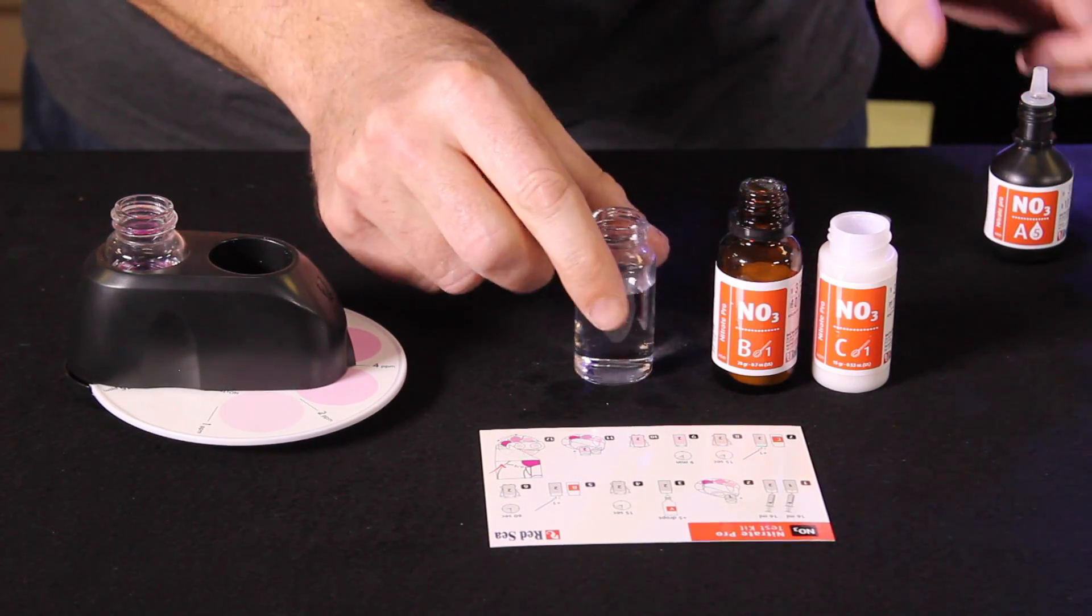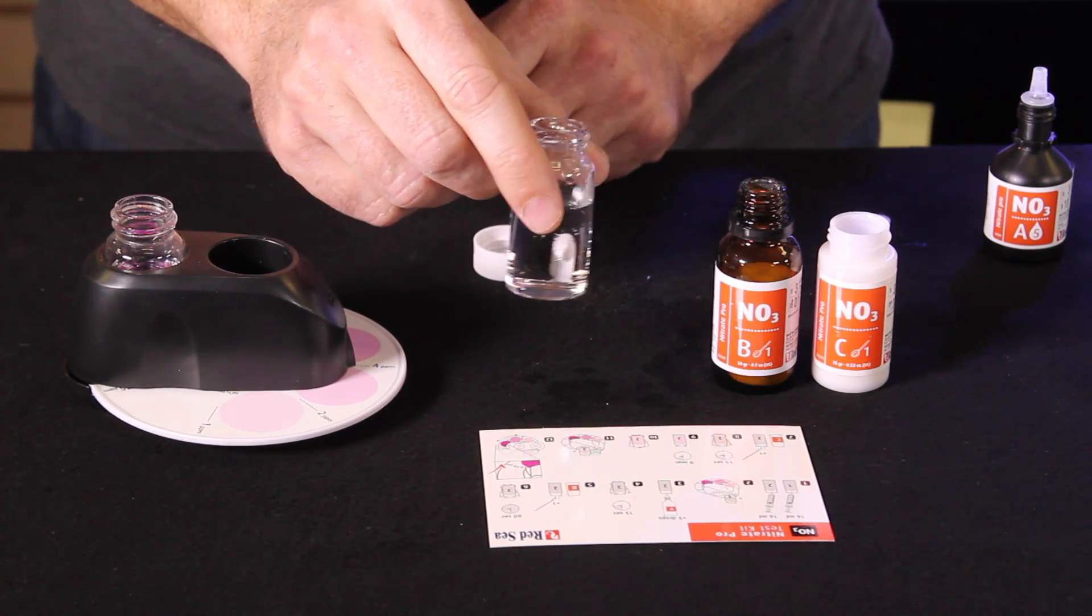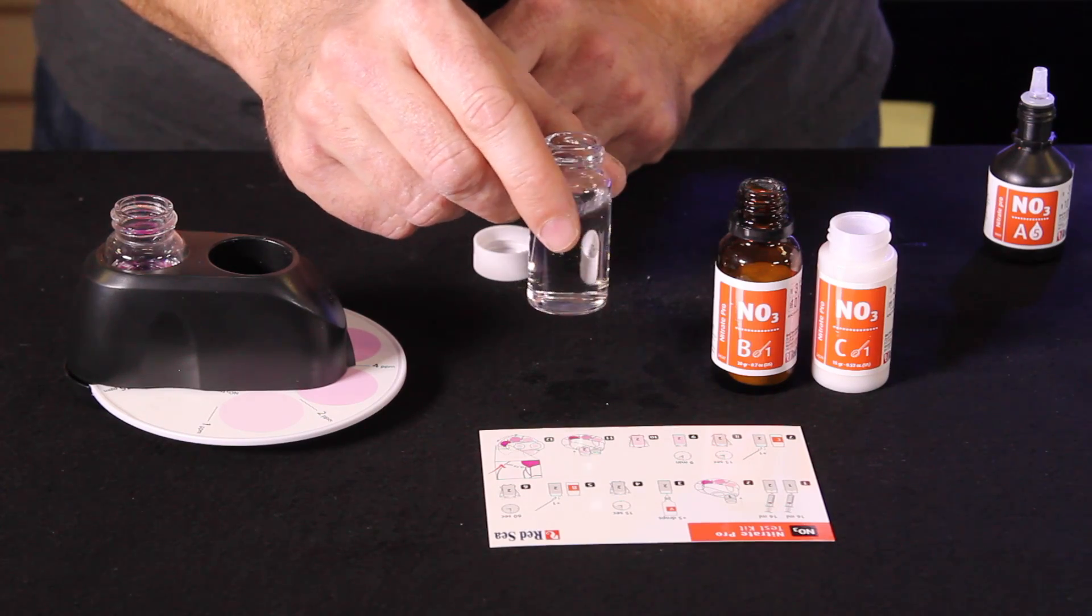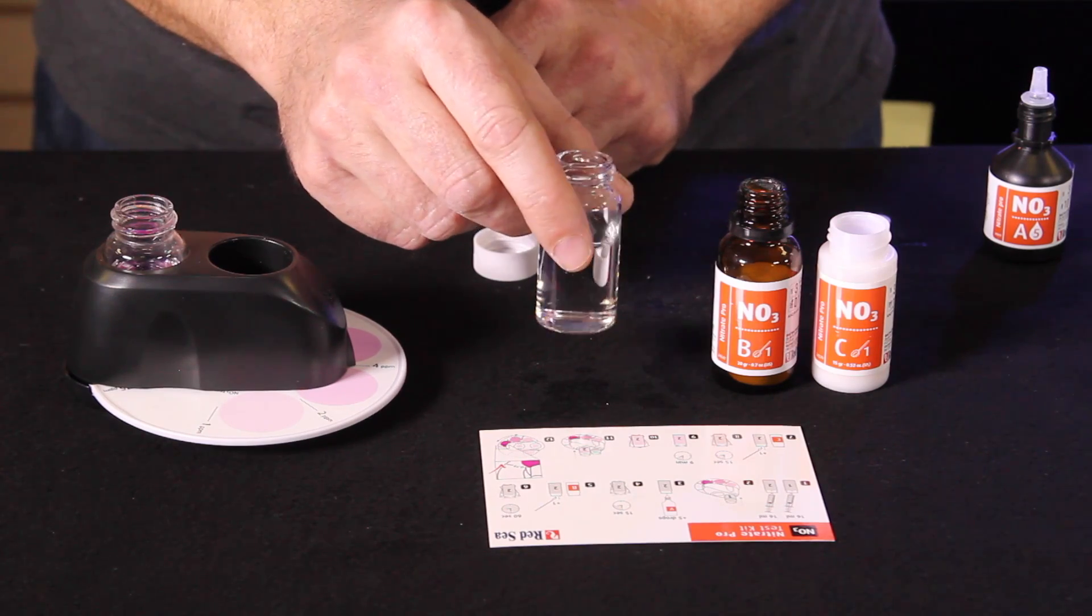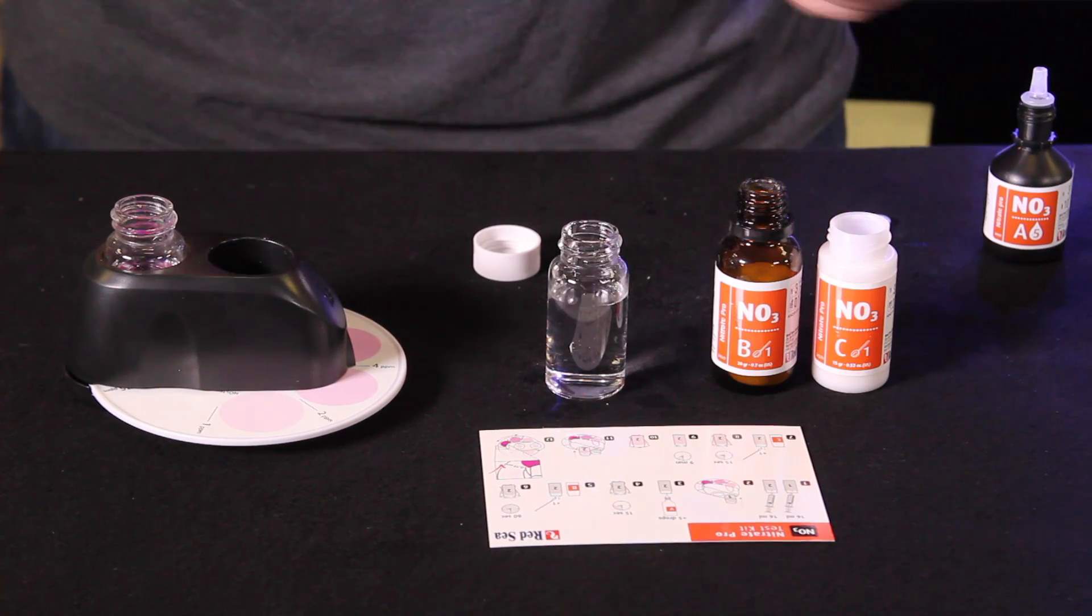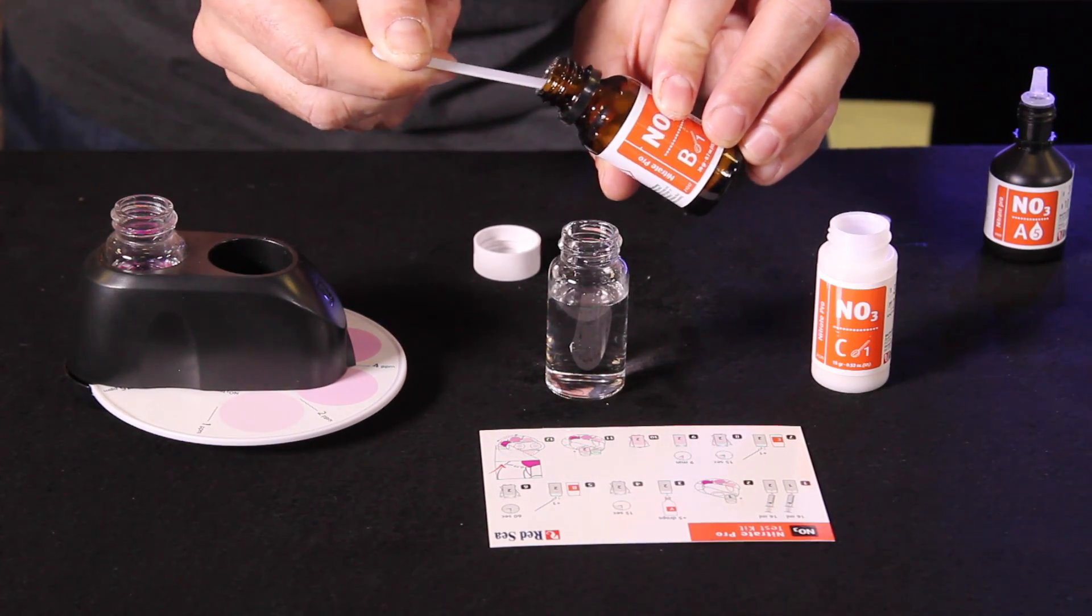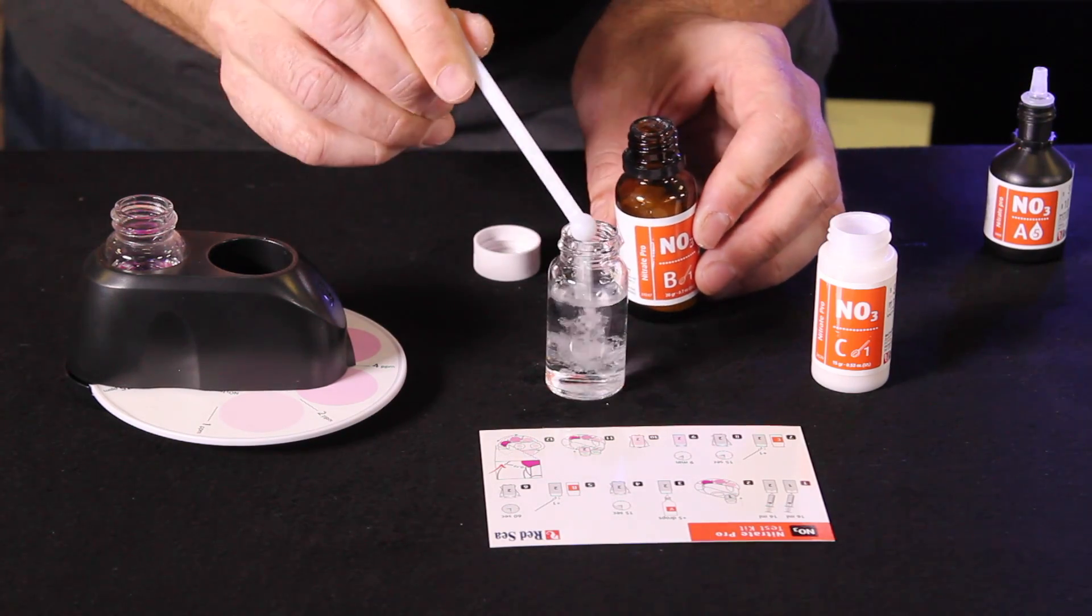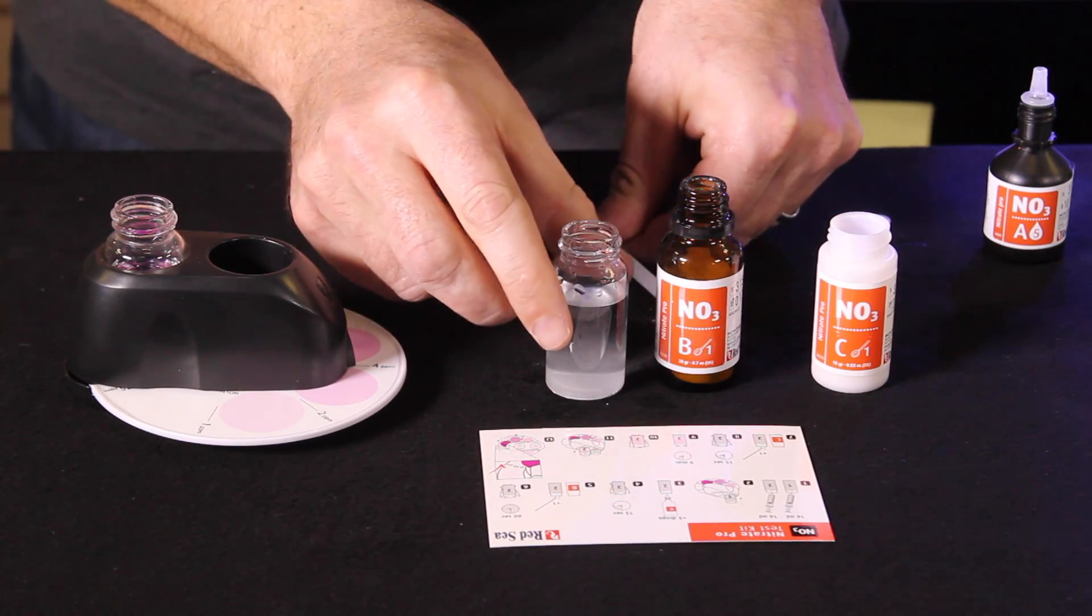Now we need to swirl that for 15 seconds. The next step will be to add one level scoop of reagent B. Now reagent B is a powdered reagent so you want to take your time to make sure you get a level scoop. Sometimes you can use a card to level it. Just try to be accurate in how much you're adding.